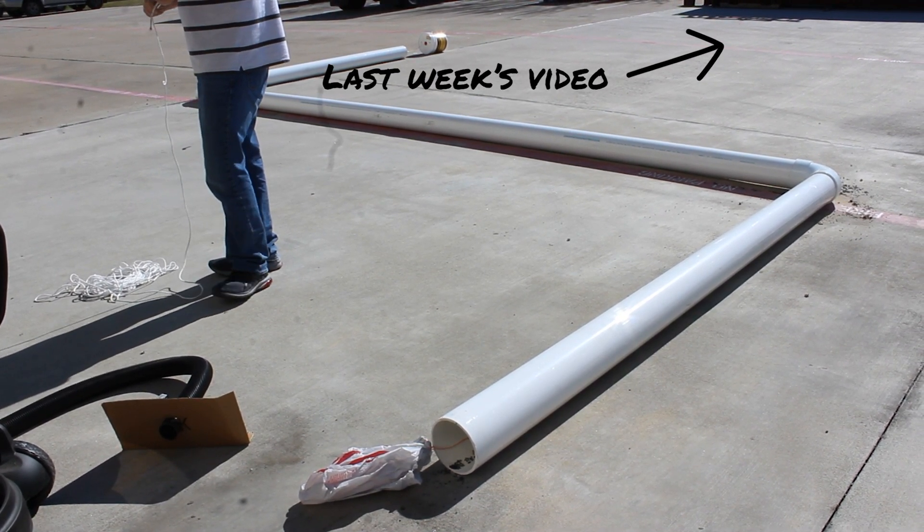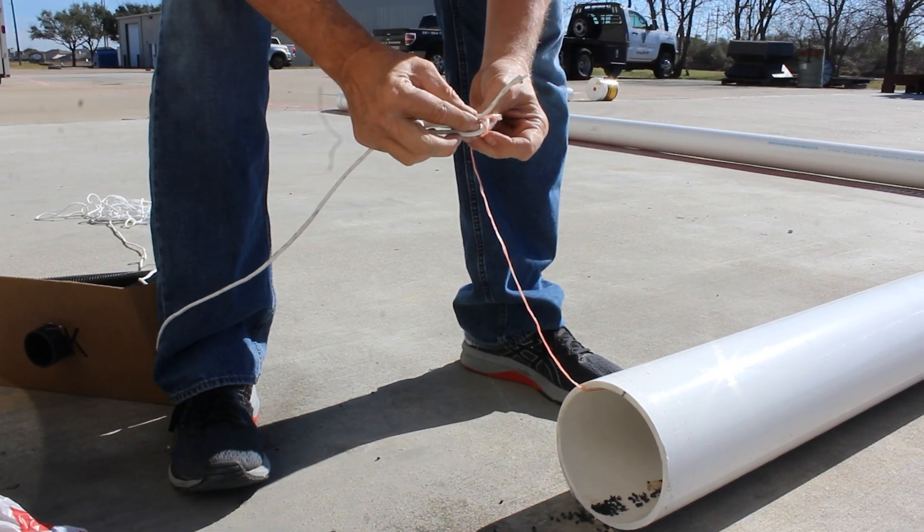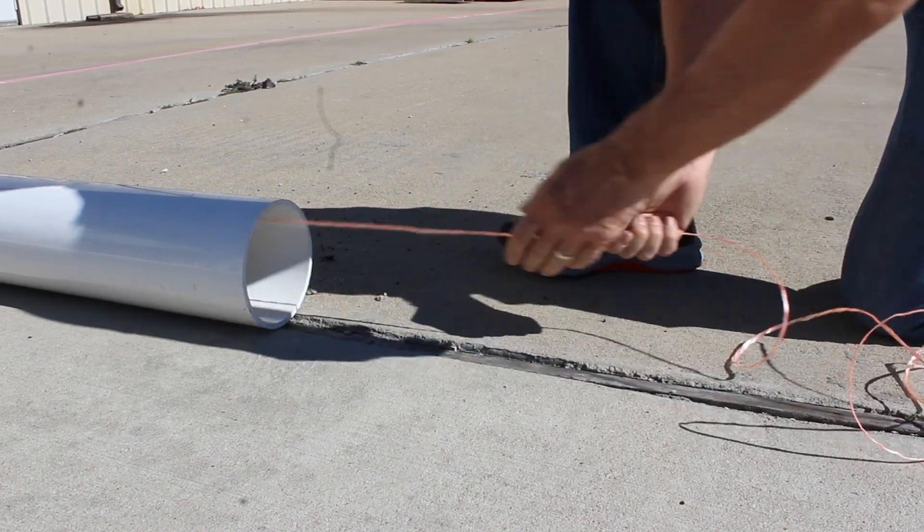First, we're going to take our jet line and tie it to a rope, and then we're going to pull the jet line all the way through the other side to make sure that the rope gets through the pipe.